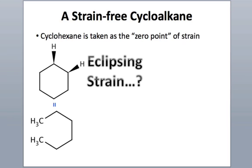In the last few minutes, I wanted to take a look at a strain-free cycloalkane — one that has neither eclipsing nor angle strain due to non-ideal angles. That compound is cyclohexane. You might look at cyclohexane, see that it's a regular polygon with 120-degree angles, and think there should be some angle strain because it's fairly far from the ideal bond angles of 109 degrees.